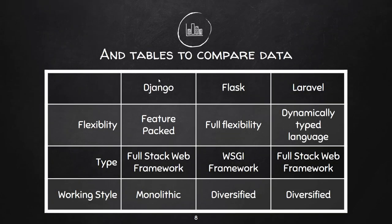We also have a table comparing Django, Flask, and Laravel. When it comes to flexibility, Django is fully feature-packed, Flask is fully flexible, and Laravel is also fully flexible. 'Feature-packed' means Django comes packed with all the features — you cannot change the way Django is written. If you change the structure or the file type, you'll get lots of errors and bugs. Django is a full-stack web framework that handles both the back end and the front end, including static files like CSS and JavaScript. Flask is just a web server gateway interface framework — it only handles the connection between the server and the client.